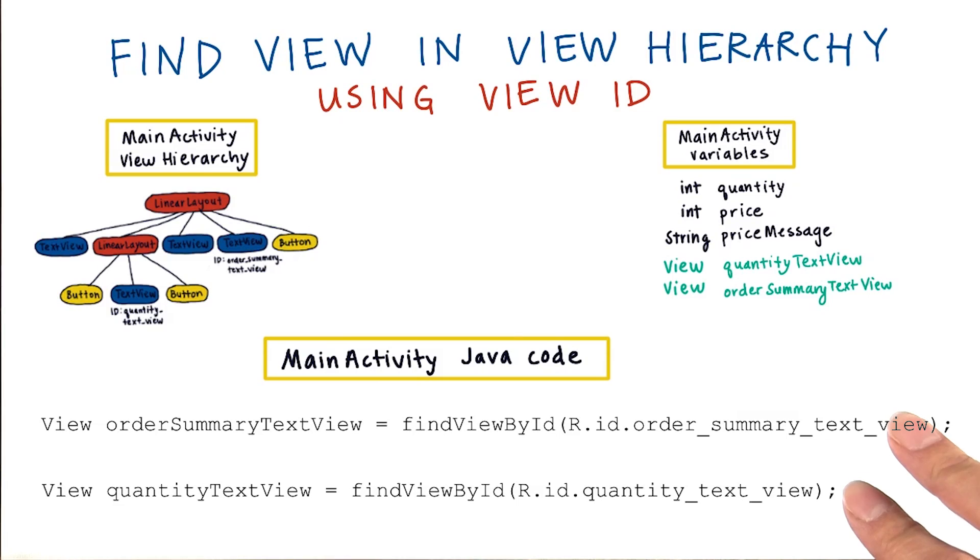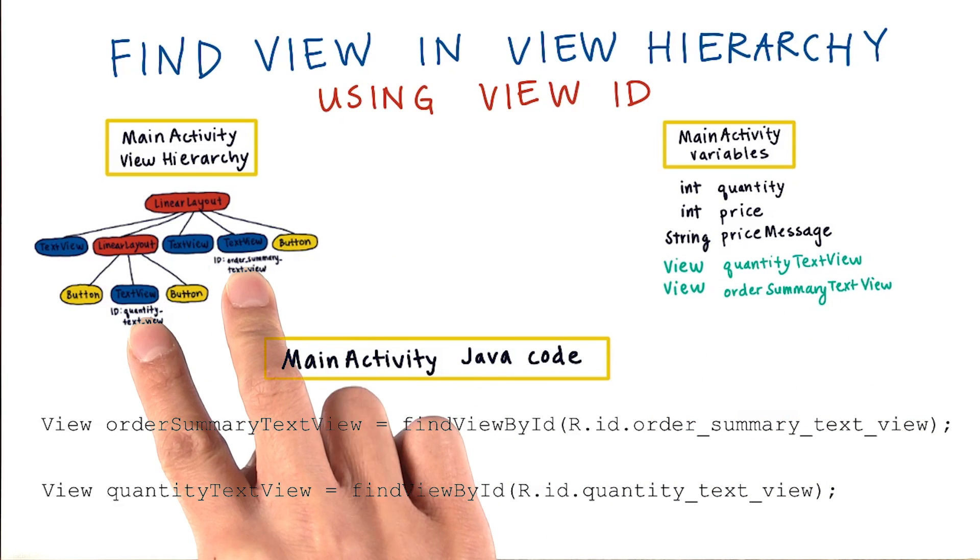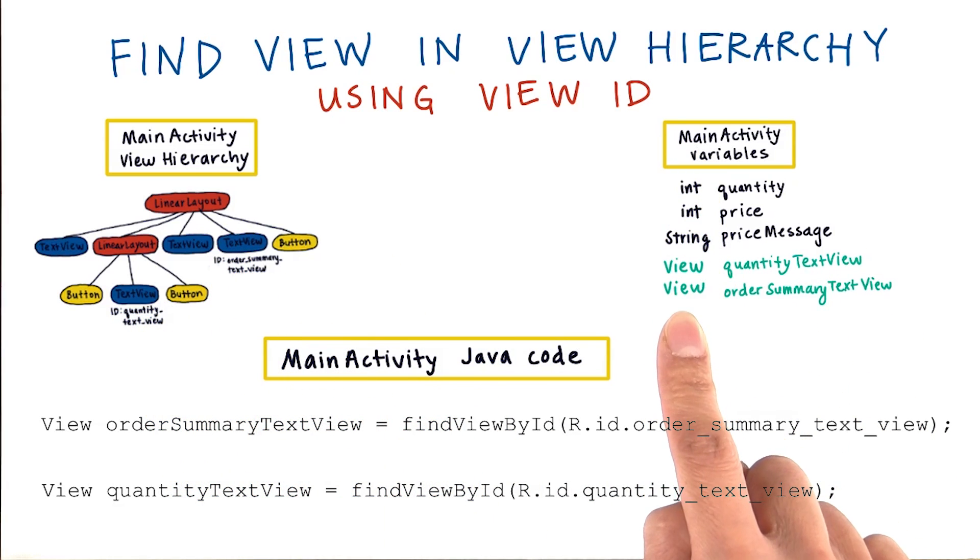This explains how you can have quantityTextView and orderSummaryTextView variables within the main activity, and that these variables can connect to these Java objects in the view hierarchy. By the way, I listed the data types here of each of these variables in the left-hand column. So these two variables have a type view, as declared here.